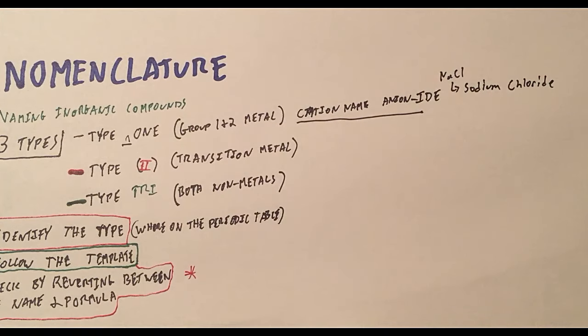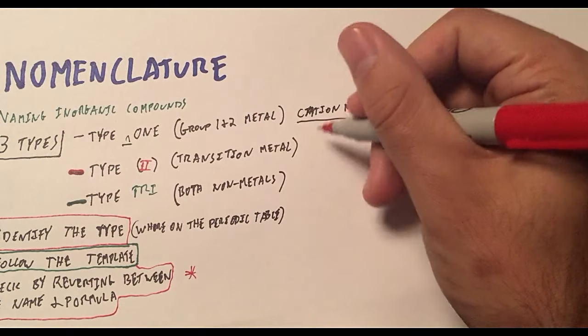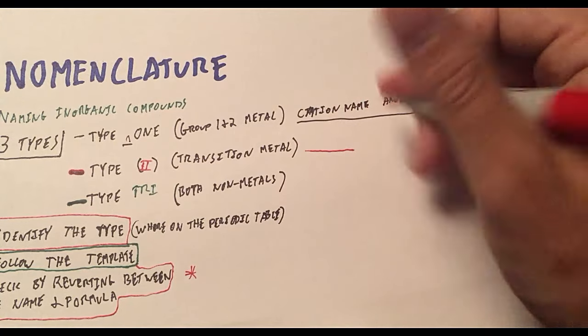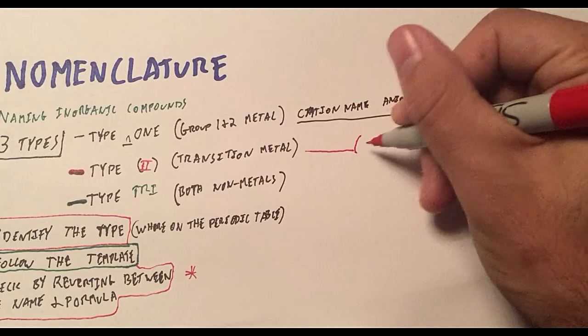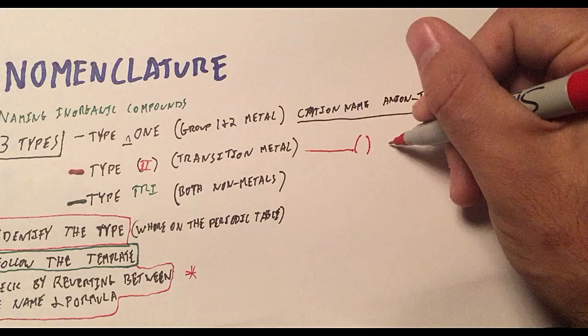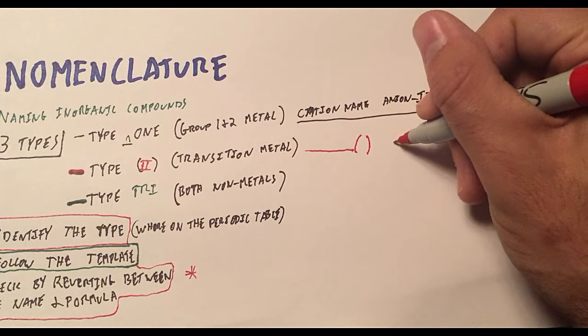Let's go ahead and do Type 2, which involves a transition metal. This is where we're going to have the cation name again, so I'm just going to put a space for that name. Then you're going to have Roman numerals without a space, so they're going to be right on that name. Then you have a space and the anion name that you're going to end in -ide again.